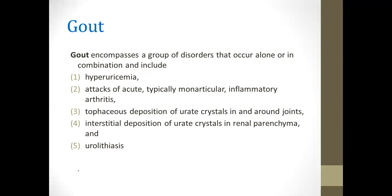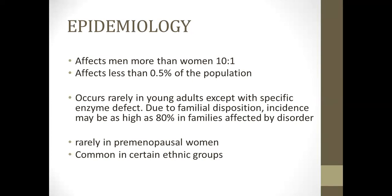Gout encompasses a group of disorders that occur alone or in combination: hyperuricemia, attacks of acute typically monoarticular inflammatory arthritis, tophaceous deposition of urate crystals in or around joints or in renal parenchyma, and urolithiasis. It affects men more commonly than women, affects less than 0.5% of the population, occurs rarely in young adults except with specific enzyme defects. There's high incidence in families, with 80% affected. It's rare in premenopausal women and more common in certain ethnic groups, certain Native American groups, and certain Jewish populations.